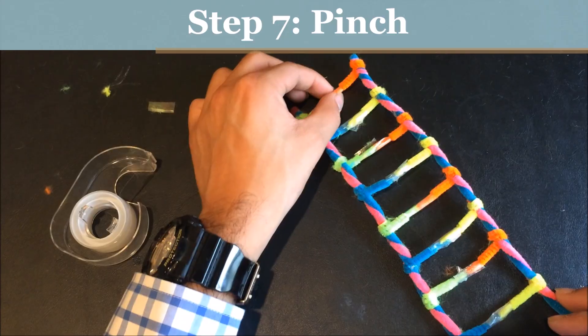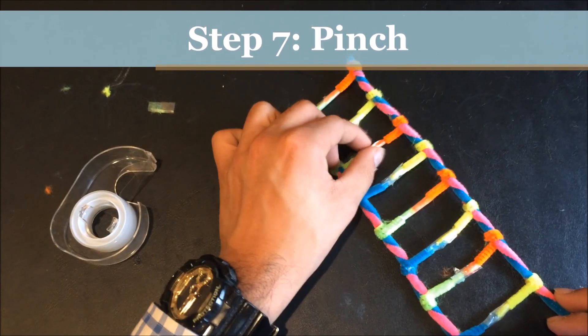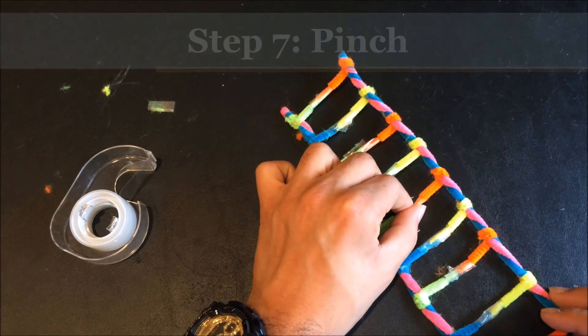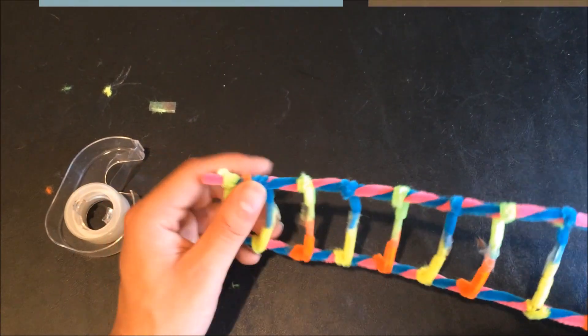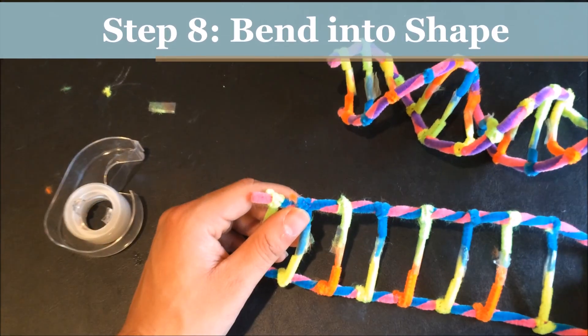Once you have taped each of the rungs of your ladder, you are almost there. So go ahead and just pinch through the tape. Make sure that it's a tight hold. Now, you're ready to bend it into shape.